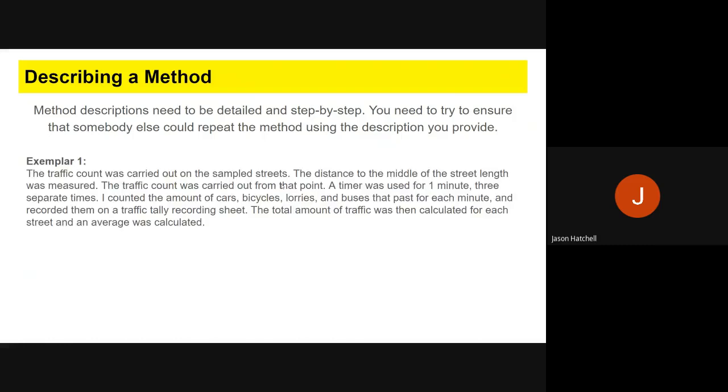For example, here's one good example. A traffic count was carried out on the sample streets. I measured the distance to the middle of the street and stood there. From that point, I put a timer on for one minute, three separate times. I counted the amount of cars, bicycles, lorries, and buses that went by and recorded them on my tally sheet. The total amount of traffic was then calculated by getting an average for each street.